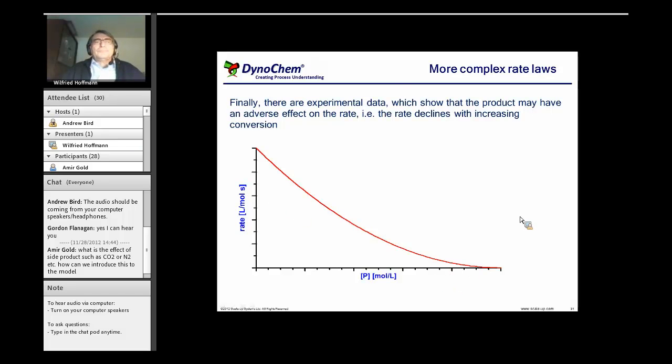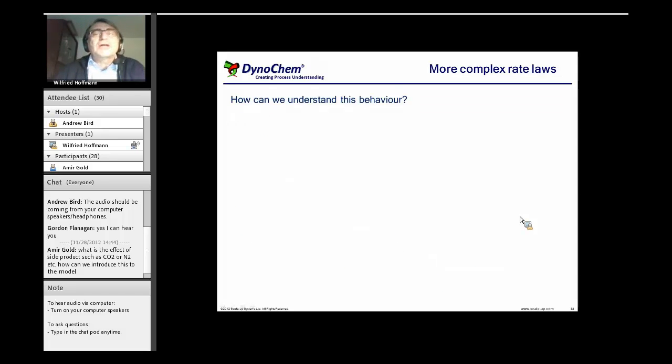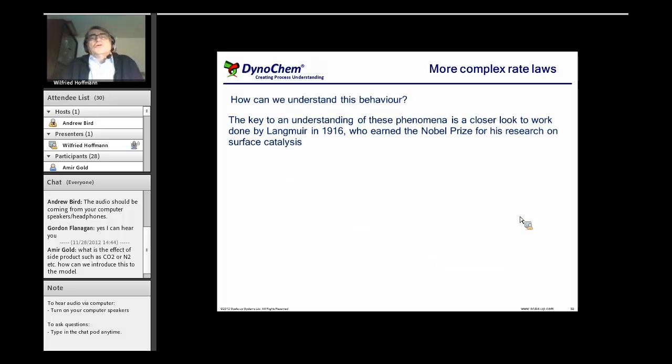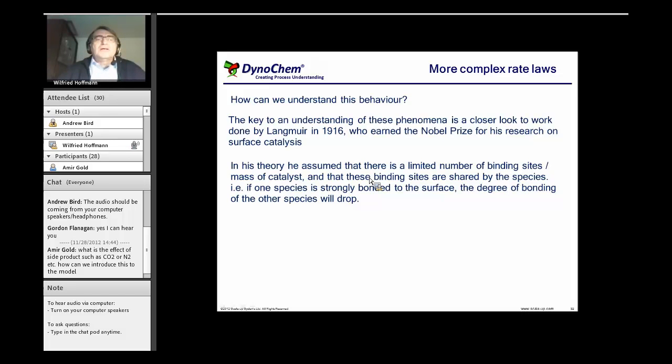How can we understand this behavior? The key is the understanding of solid-liquid surface catalysis by Langmuir in 1960. In the early last century he got the Nobel Prize for this, and he assumed that there is a limited number of binding sites per mass of catalyst.